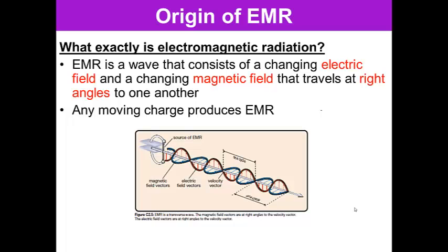Any moving charge produces electromagnetic radiation. So moving electrons produce electromagnetic radiation. Because these waves are traveling at right angles to each other, this is called a transverse wave.